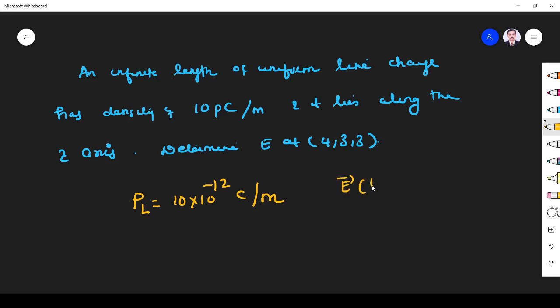Find the electric field at (4, 3, 3). The line charge is lying on the z-axis. We have to find the electric field at x=4, y=3, z=3. So E(4,3,3) is what we have to find.